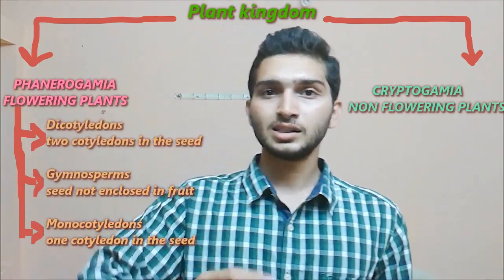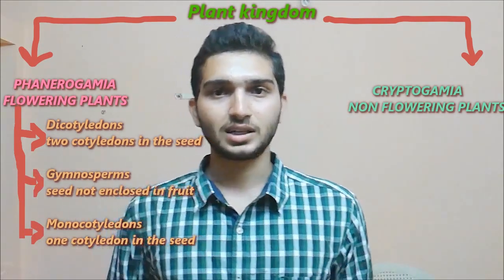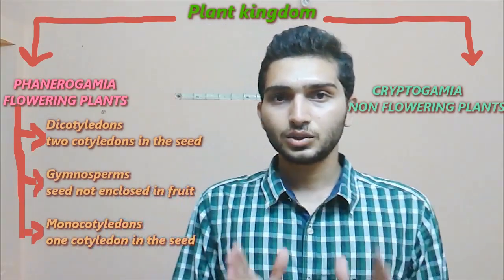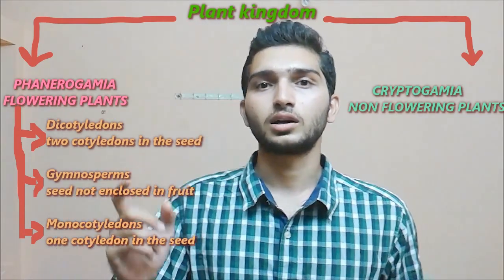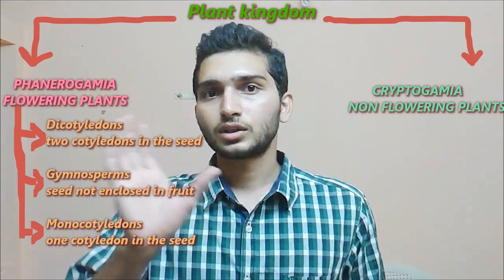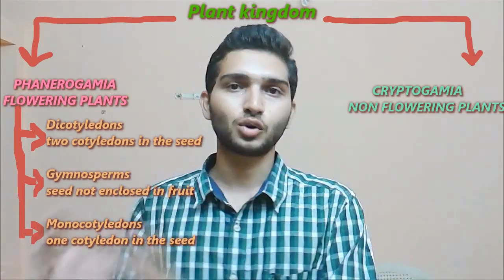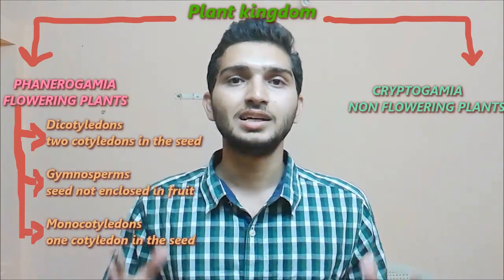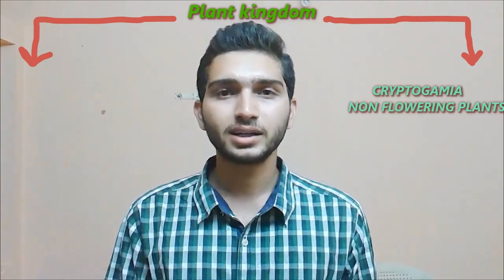These three sub-groups are dicotyledons, gymnosperms, and monocotyledons. Notably, gymnosperms is placed in between dicotyledons and monocotyledons, which forms a major demerit of this classification system and is considered one of its significant drawbacks.